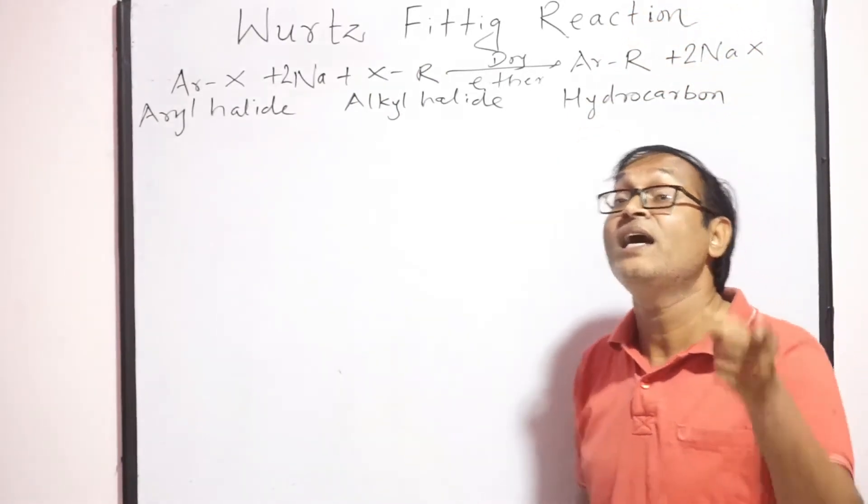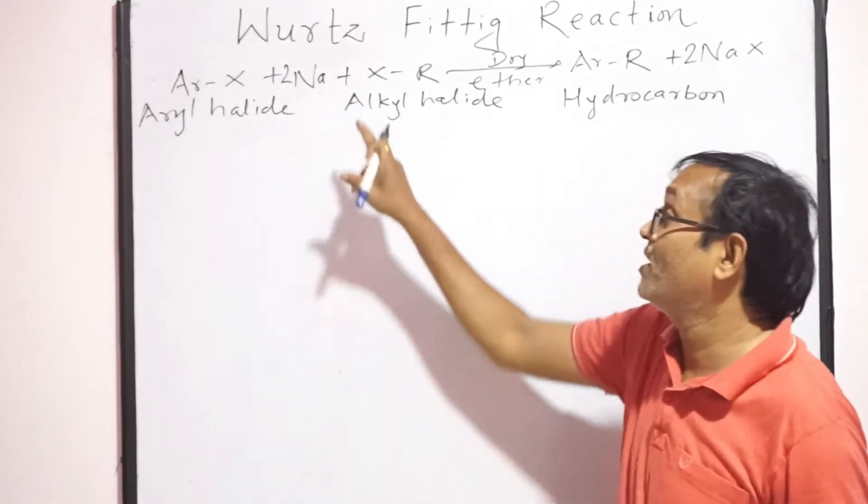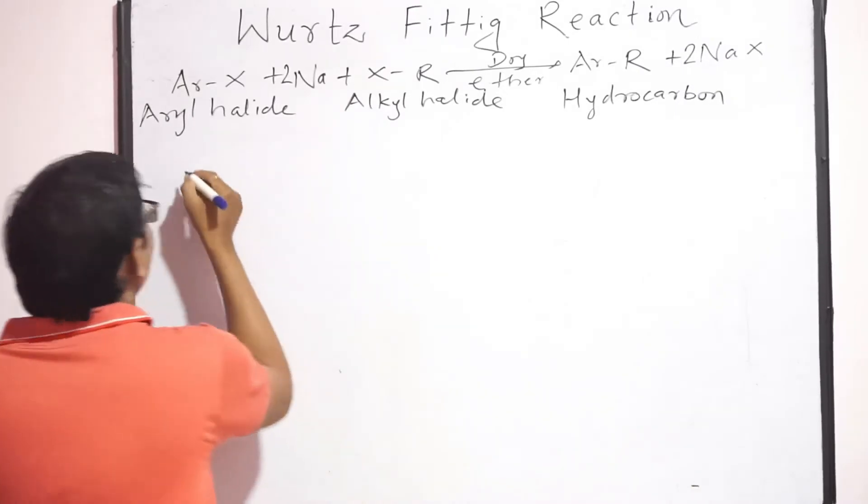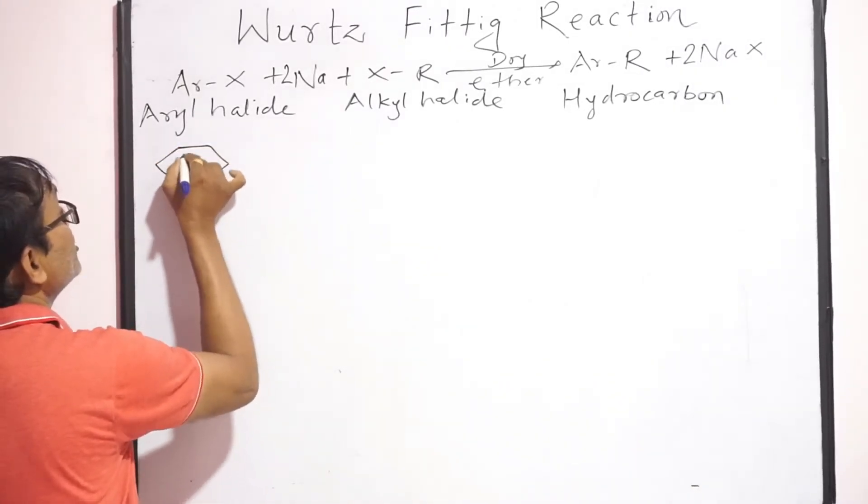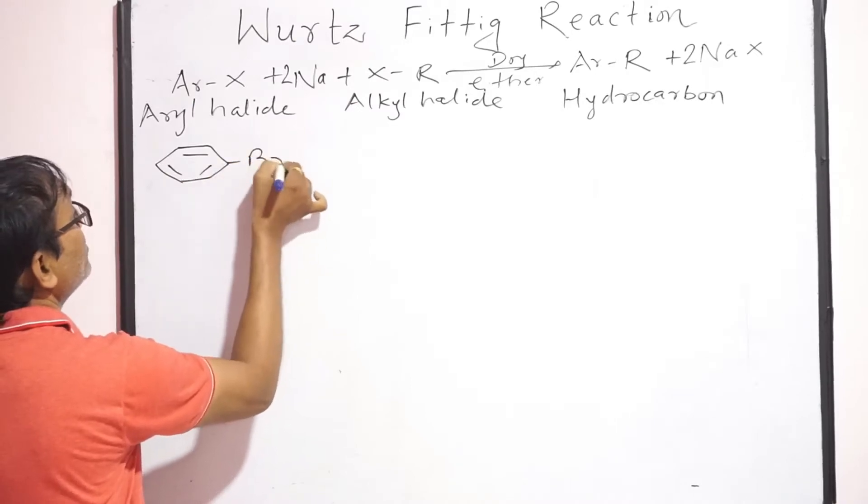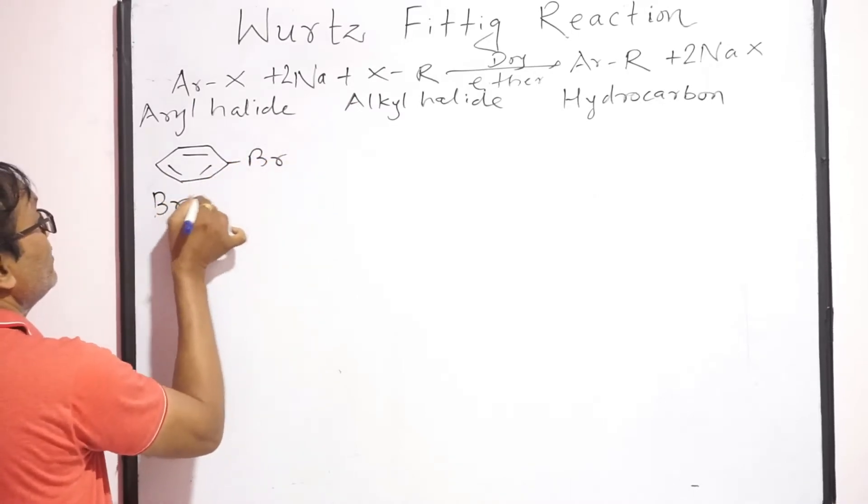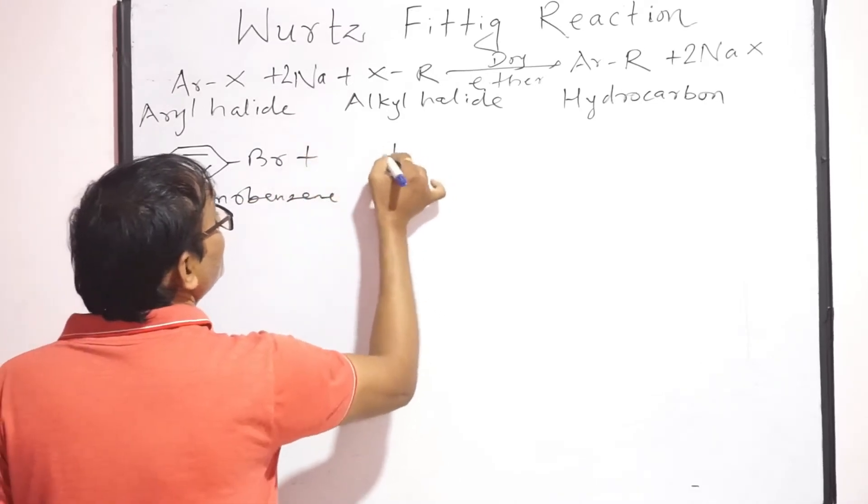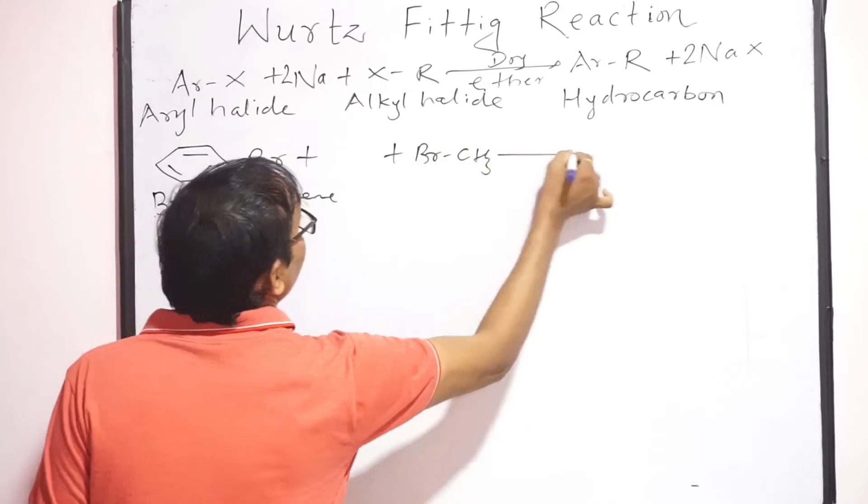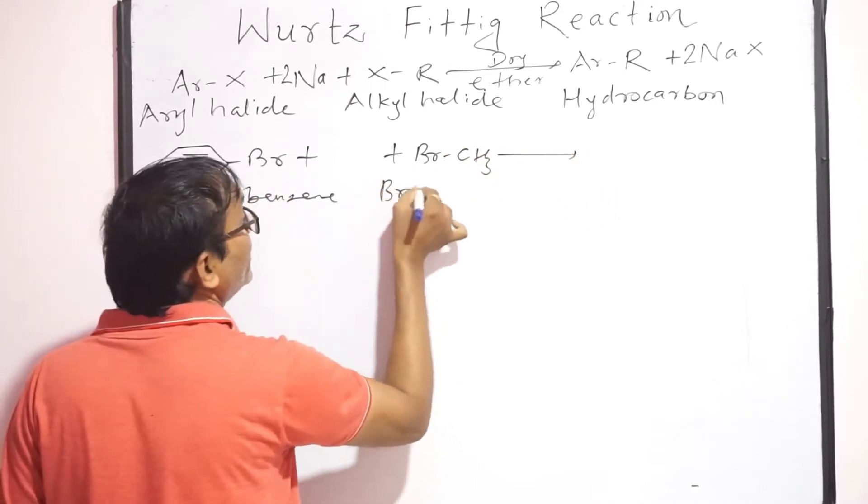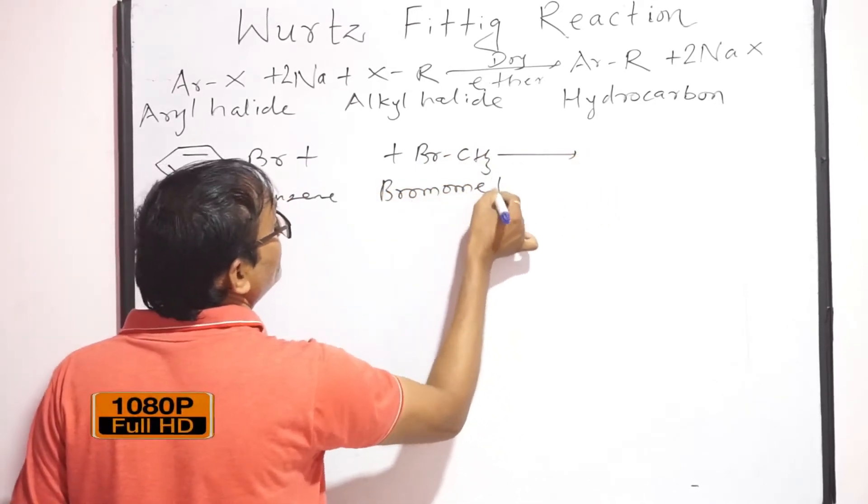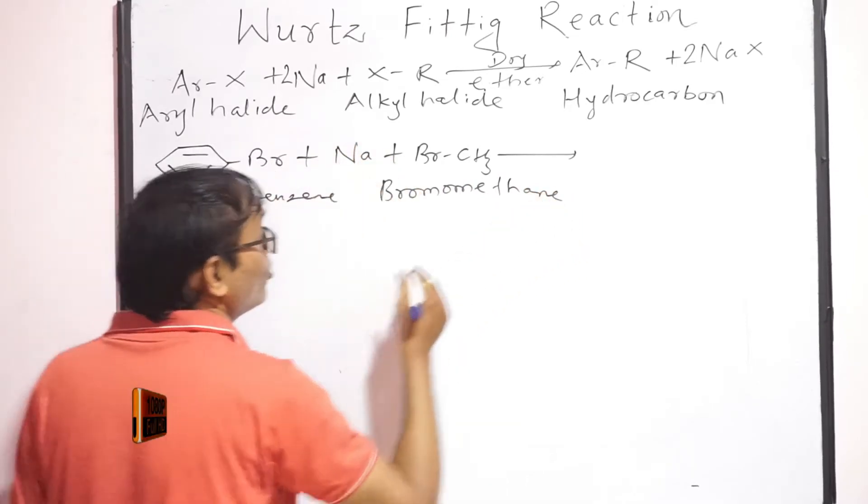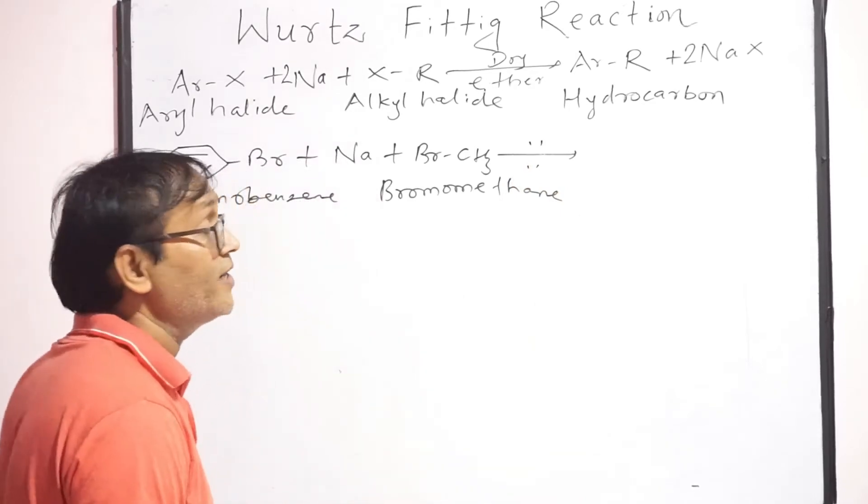Mixture of alkyl halide and aryl halide is treated with sodium. Ab example hum dekhte hain. Yaha pehla example lenga bromobenzene. Bromobenzene ring ko dhyan mein rakhna. Hume milega bromobenzene. Isko hum treat karenge, isko hum treat karenge bromomethane. IUPAC name hi hum use karenge, you can use even common name. Sodium metal, active metal hum use karenge. Reagent solvent kya hoga, dry ether.